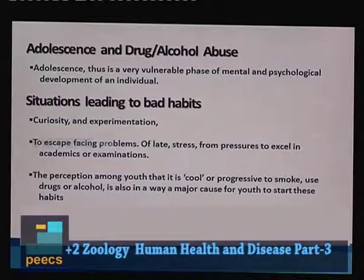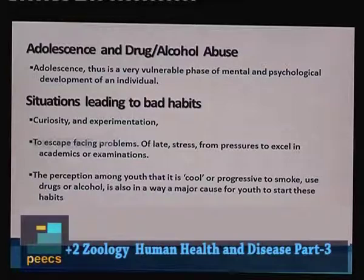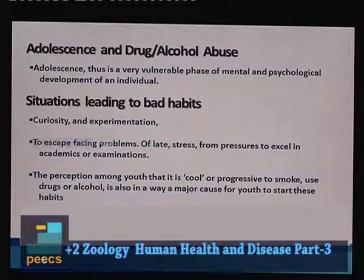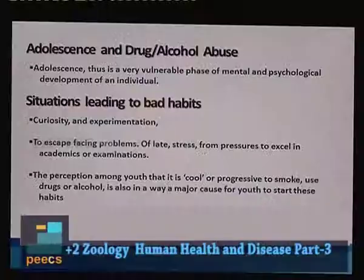Adolescence is closely linked with drug abuse and alcohol abuse. Adolescence is a bridge between childhood and adulthood, the period between 12 to 18 years of age. During this phase, it is a vulnerable period for physical, mental and psychological development. Different situations leading to these bad habits include curiosity or experimentation, desire to escape from stress or pressure to excel in academics, and the misconception that smoking or using drugs is 'cool' or progressive.